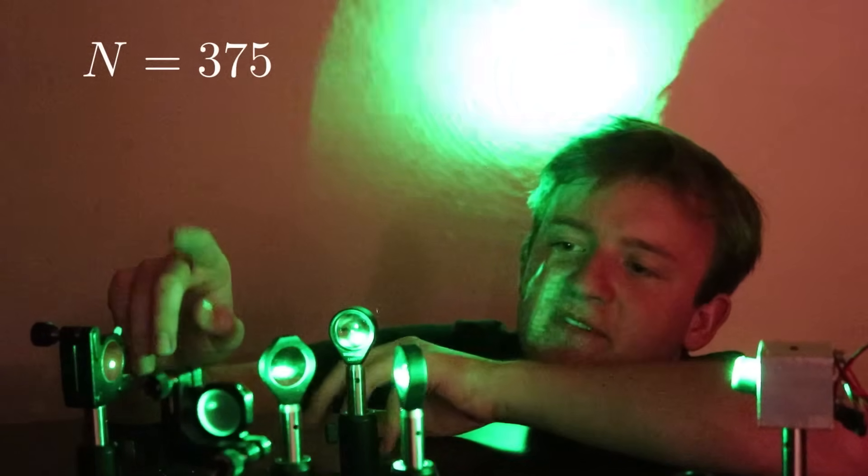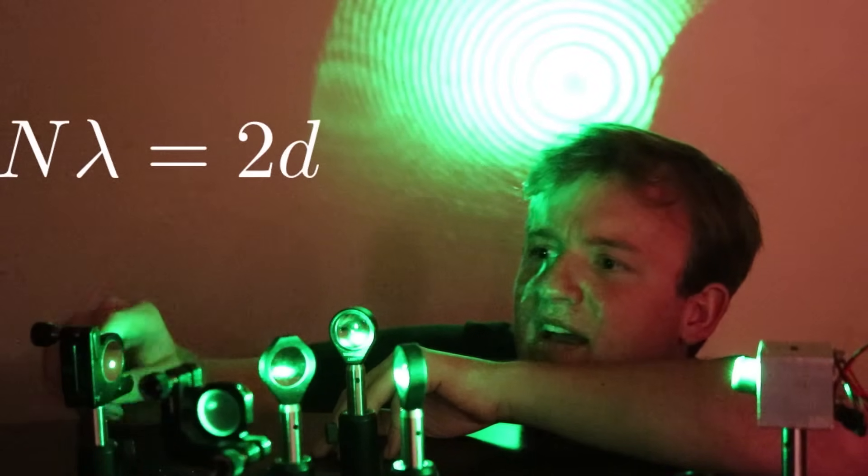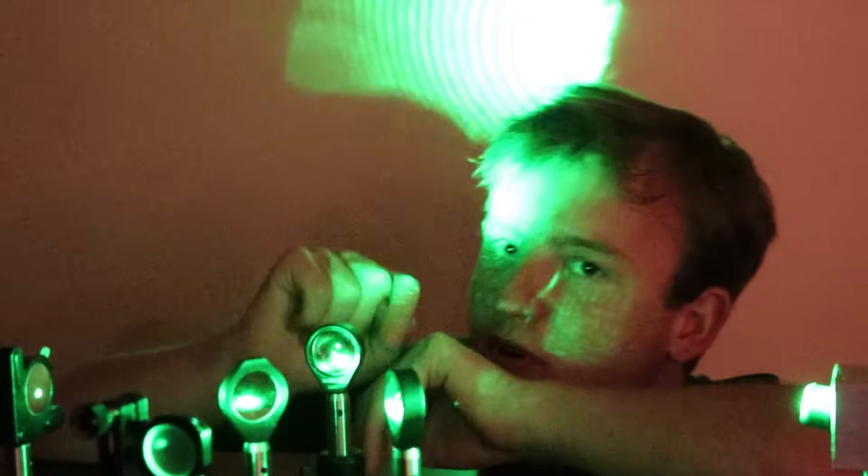which is the number of times it went from bright to bright. So thus, we know that big N times lambda has to be equal to two times this distance. In other words, lambda, the wavelength of the light,